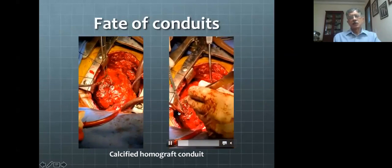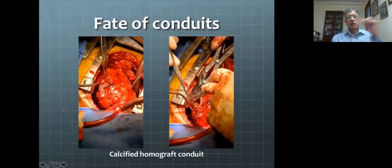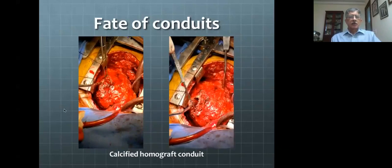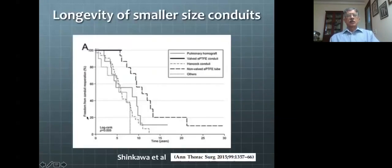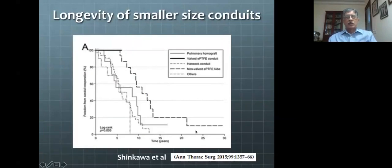It is important for cardiologists to realize that replacing a conduit is quite a surgical challenge — not as straightforward as it might seem. Calcification exists not only with biological tissues but also with inert substances like PTFE — an explanted PTFE graft shows dense calcium deposits on the leaflets making the conduit very dysfunctional. A paper from the Japanese group Shinkawa et al. in 2015 compared their own Gore-Tex conduit with the Hancock conduit, normal PTFE conduit, and pulmonary homograft. In smaller sizes, almost all conduits have a very limited lifespan — by 10 to 15 years after implantation, almost 80% need to be replaced.